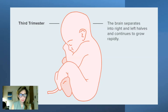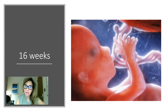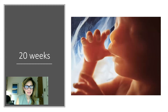By eight weeks, all the major organs are basically there. By 16 weeks, the baby is blinking and has distinct fingerprints. By 20 weeks, she can make faces — she can suck her thumb, and she's yawning and stretching in utero.